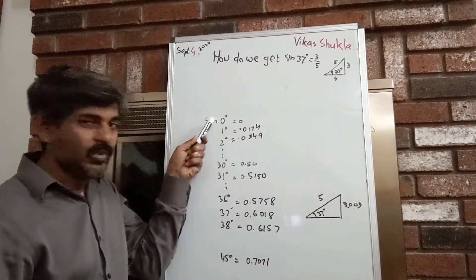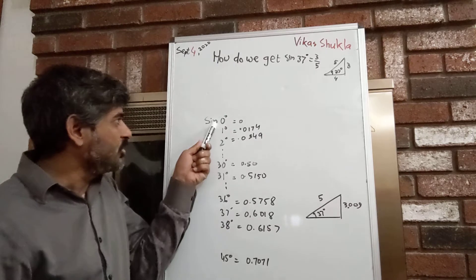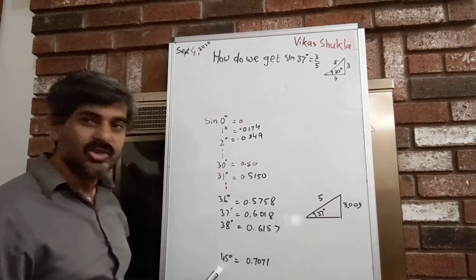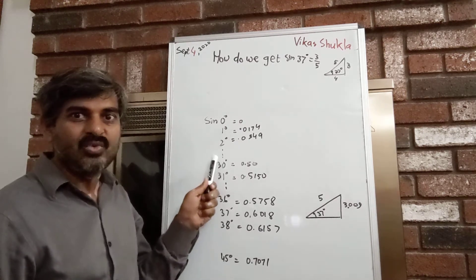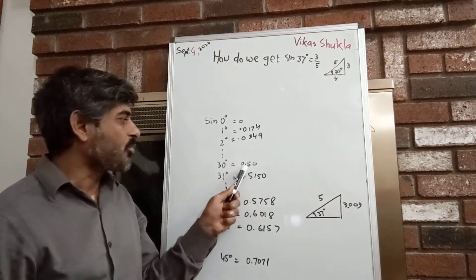To see this, we'll look at values of sine 0°, 1°, 2°, and so forth. We know that sine 30° is very precise: 1/2 or 0.50.